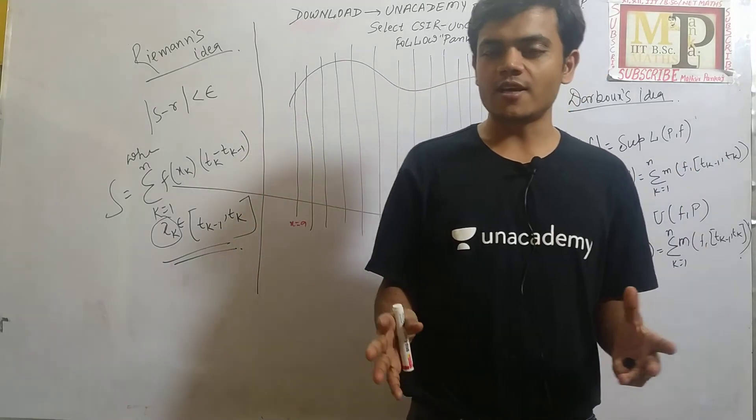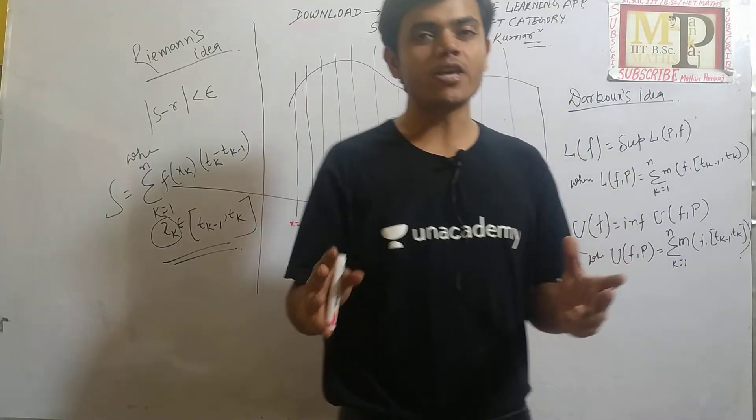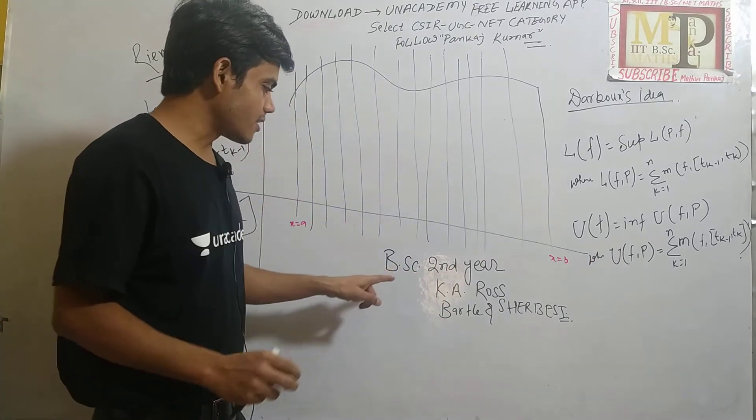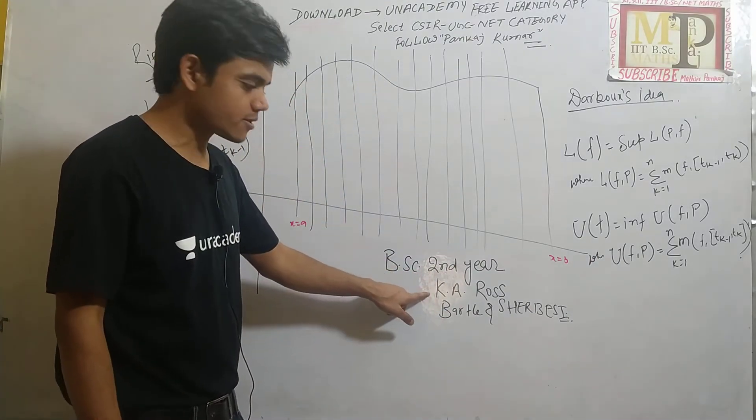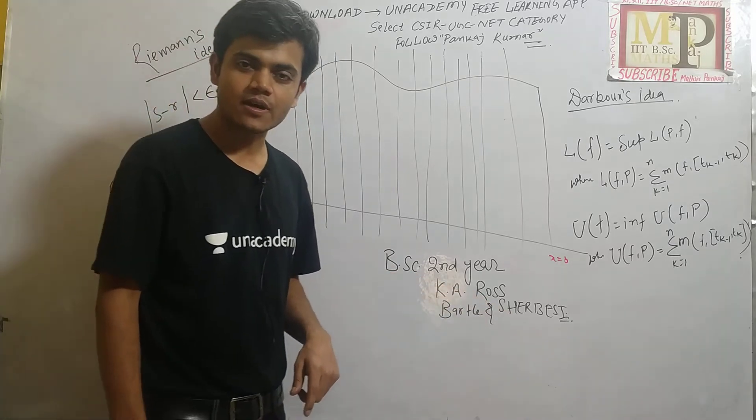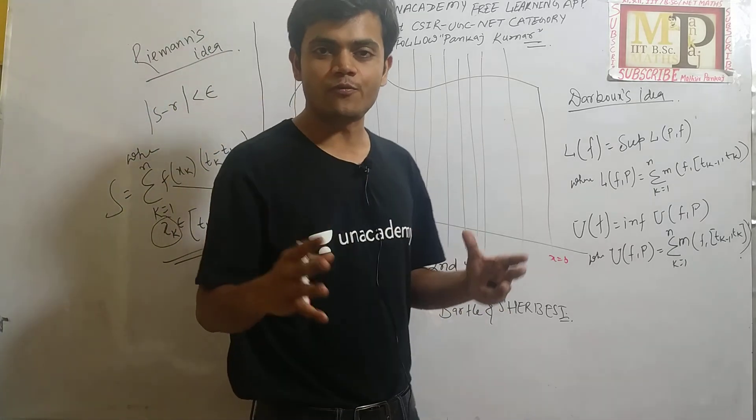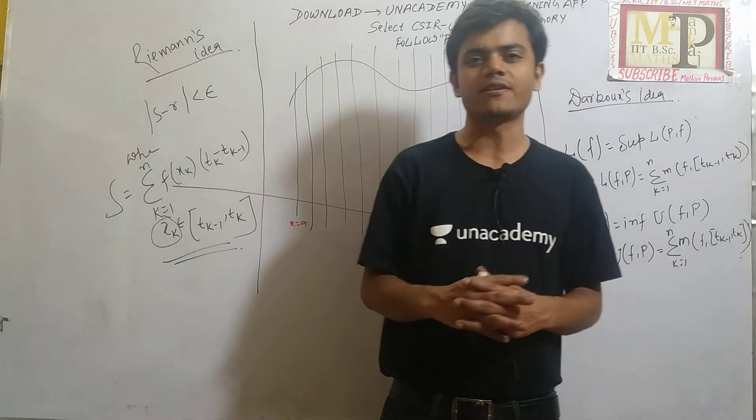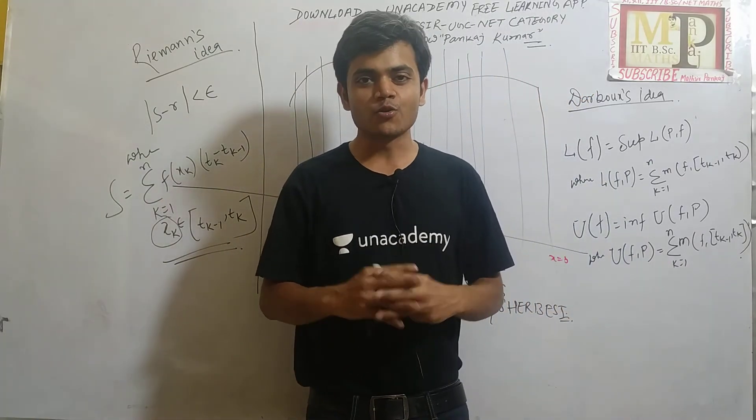We are following these two books: K.A. Ross and Bartle & Sherbert for B.Sc. second year. These lectures will be useful for CSIR UGC NET JRF as well.